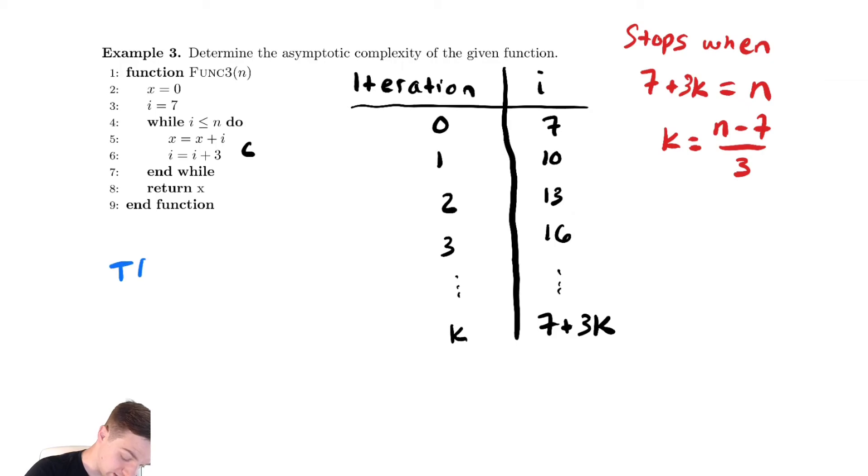My runtime would just be t of n is equal to c plus c plus c, a whole bunch of constants because that's what's inside of the while loop. How many constants do I get? Well, I get n minus 7 over 3 copies of that constant c.